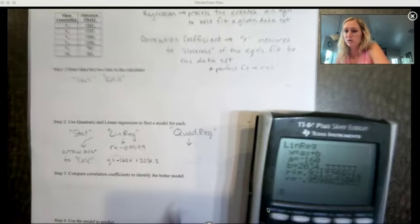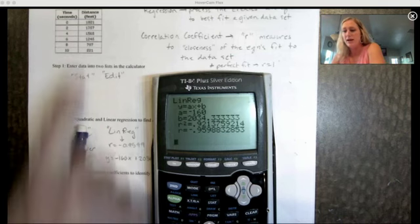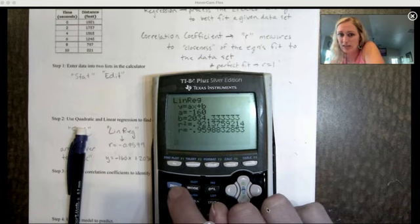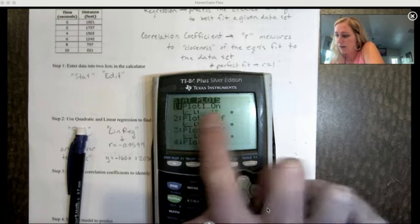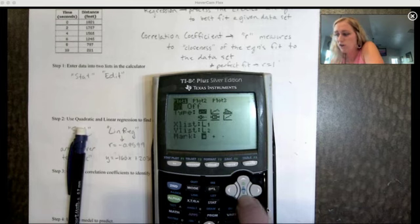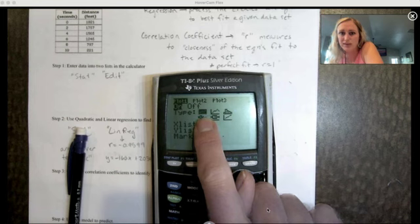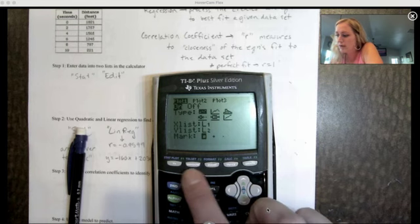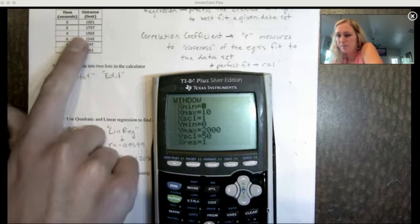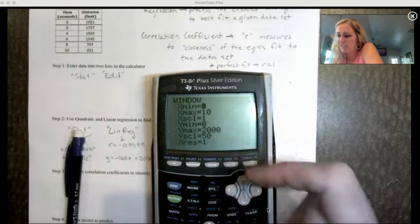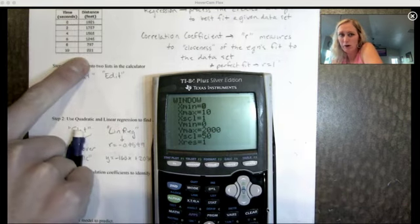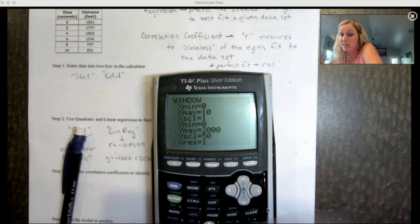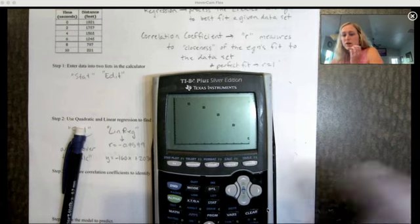I'm going to turn on a scatter plot. Imagine this table, I graphed those points. If you go to second and then y equals, I'm going to hit enter where it says plot one. You want to make sure that's on and then the type I have the scatter plot selected. Notice it says list one and list two. You might have to adjust your window. I looked back at the table - my x values went from zero to 10. My y values are all positive so I went from zero to 2,000 and I changed the y scale by 50s.